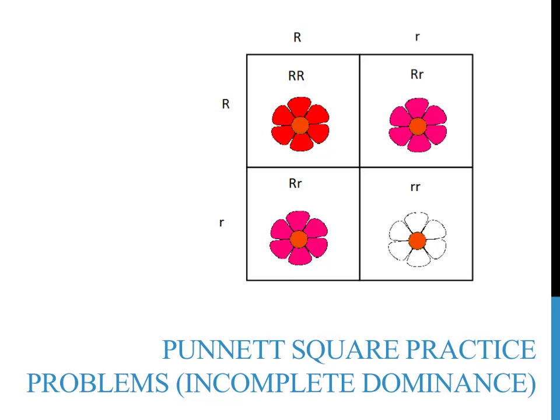The image on this slide shows a Punnett square involving incomplete dominance. Setting up Punnett squares is about the same, but the interpretation of the results is different, and this will be the focus of this video. Instead of one trait covering up another for heterozygous individuals, incomplete dominance exhibits a blending of characteristics.